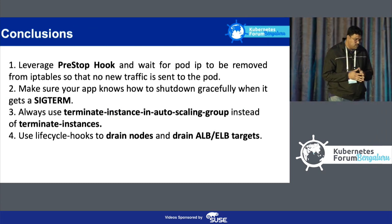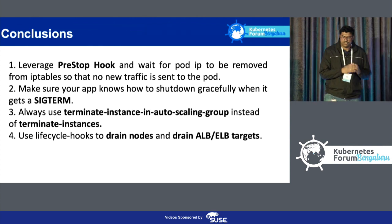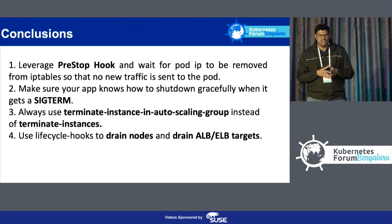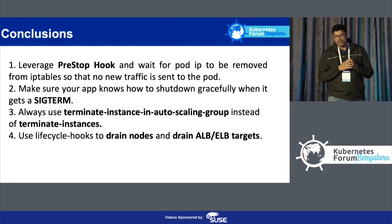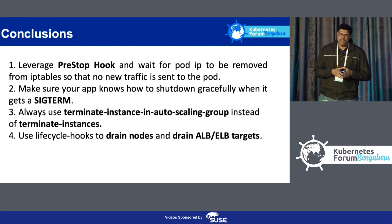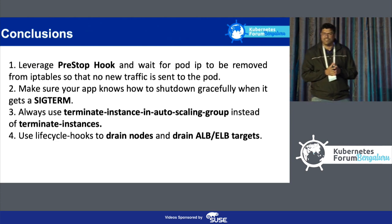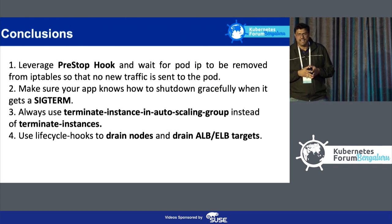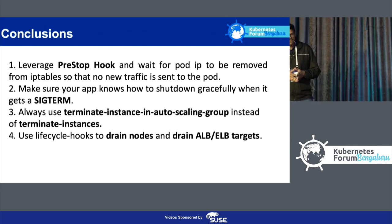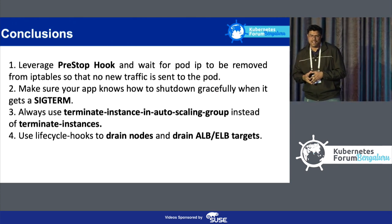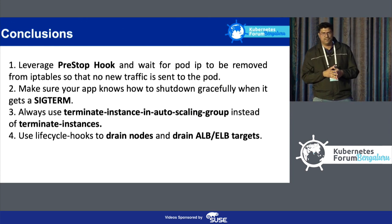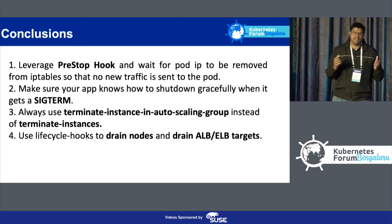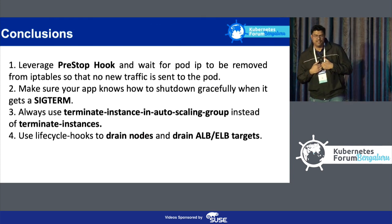In conclusion, to be resilient we need to leverage pre-stop hooks and wait for the pod IP to be removed from the IP tables so no new traffic is received on the pod. After that, the SIGTERM signal to the pod must be handled gracefully, closing all keep-alive connections. For node termination, use terminate instance in autoscaling group functions, which provide lifecycle hooks to pause EC2 termination, then drain the nodes and drain the ALB or ELB targets. Kubernetes definitely provides recoverability, but resiliency is something we need to handle and should aim for achieving.